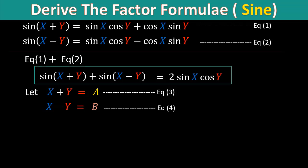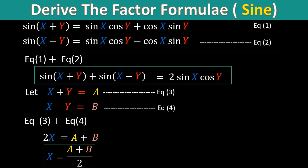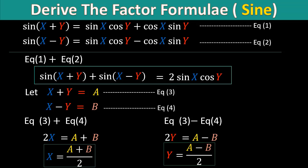We solve for equations 3 and 4. By addition we will have 2x equal to a plus b, so x equals (a+b)/2. By subtracting equation 4 from equation 3 we have 2y equal to a minus b, so y equals (a−b)/2.